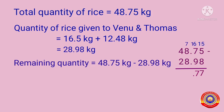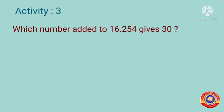We can't subtract 8 from 7 in the whole number part, so borrow from the next number — 7 becomes 17 and 4 becomes 3. Therefore, 17 minus 8 is equal to 9, and 3 minus 2 is equal to 1. Now we get 48.75 kilograms minus 28.98 kilograms is equal to 19.77 kilograms. Is it clear for you? Next, activity number 3.